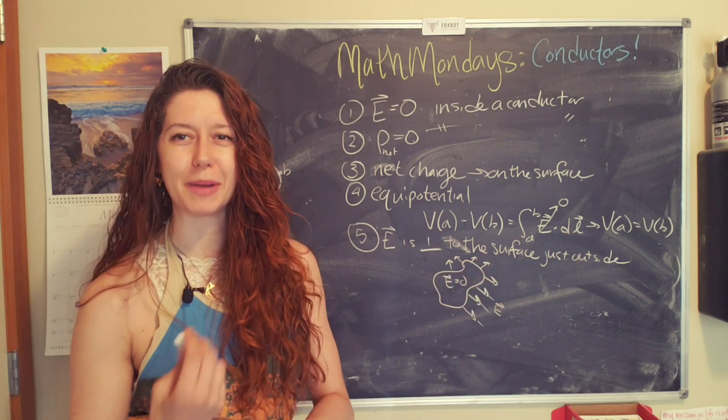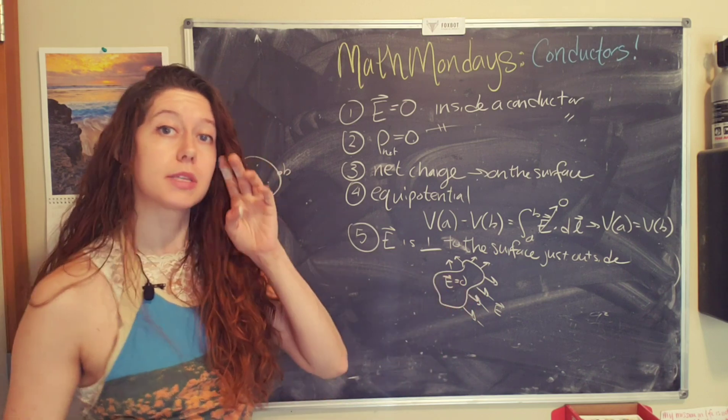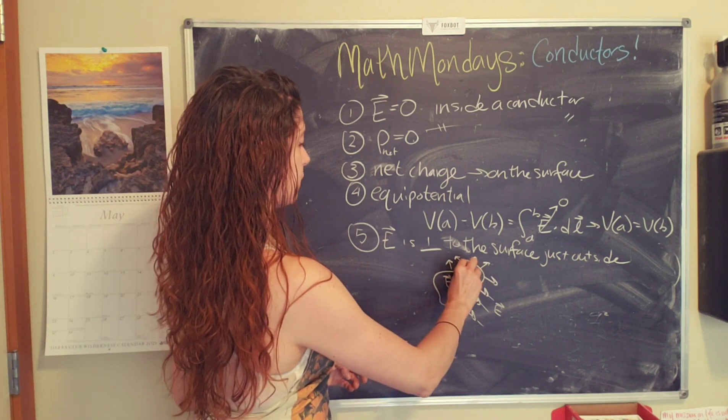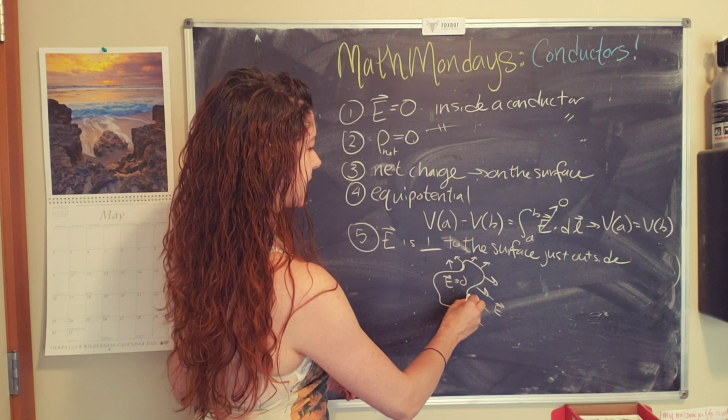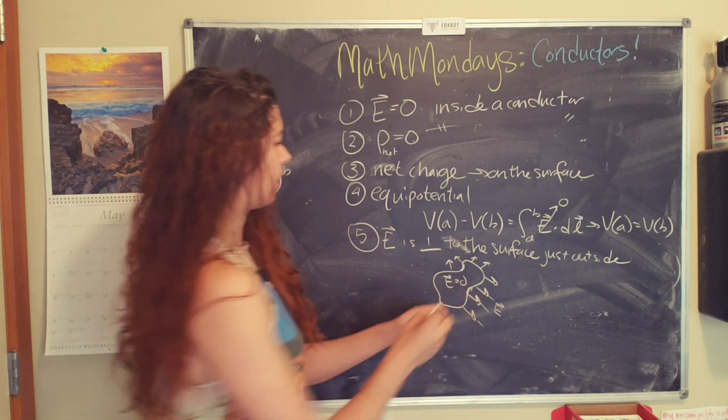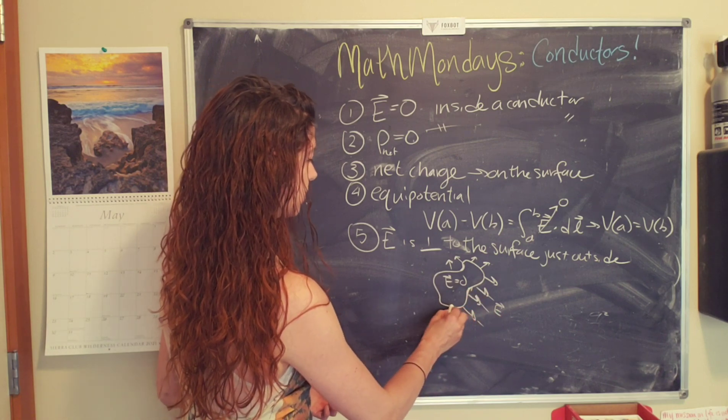Hopefully you get the point. My hand is starting to hurt from drawing all those lines. So the reason why this happens is because the charges will float to the surface to cancel any other component of the electric field that's tangential to the surface. So let's say, to make this easier to see, I'm going to draw a red line.